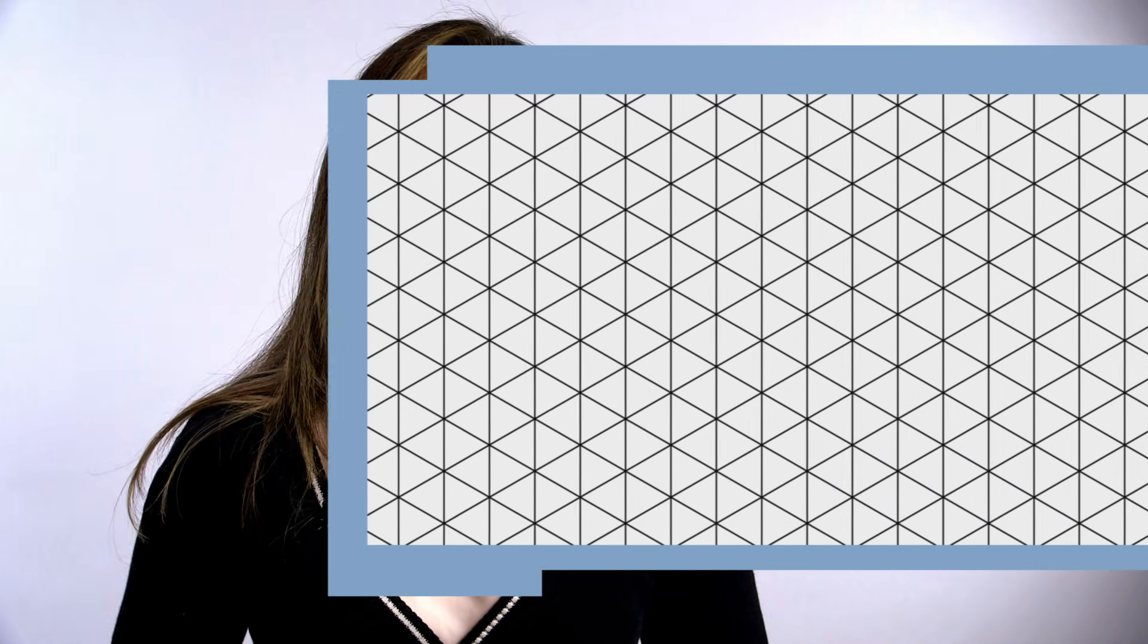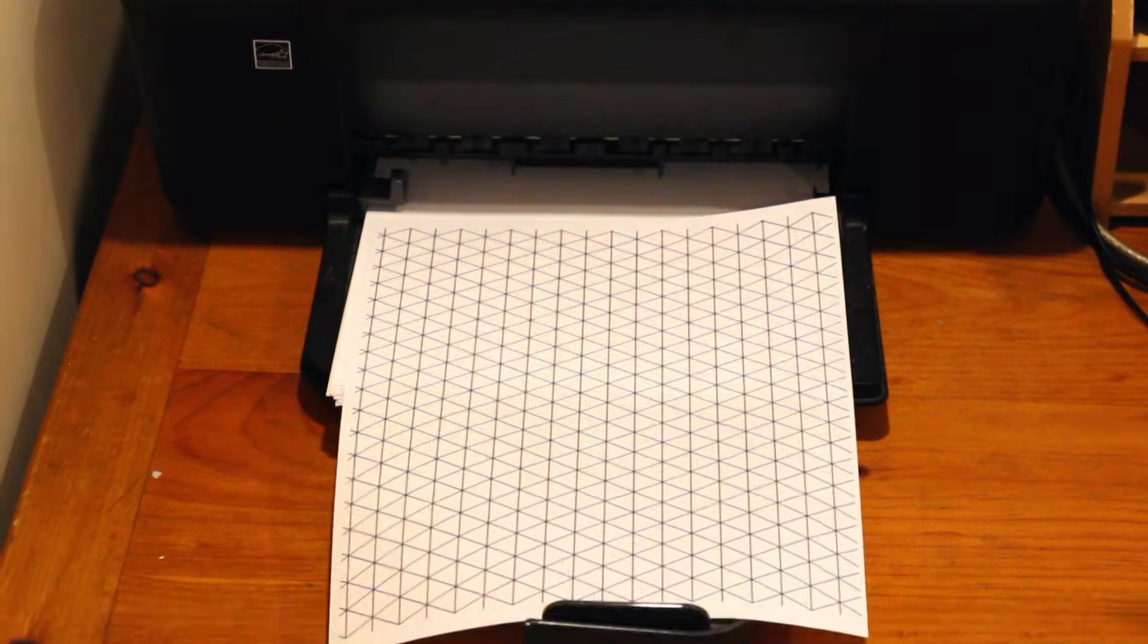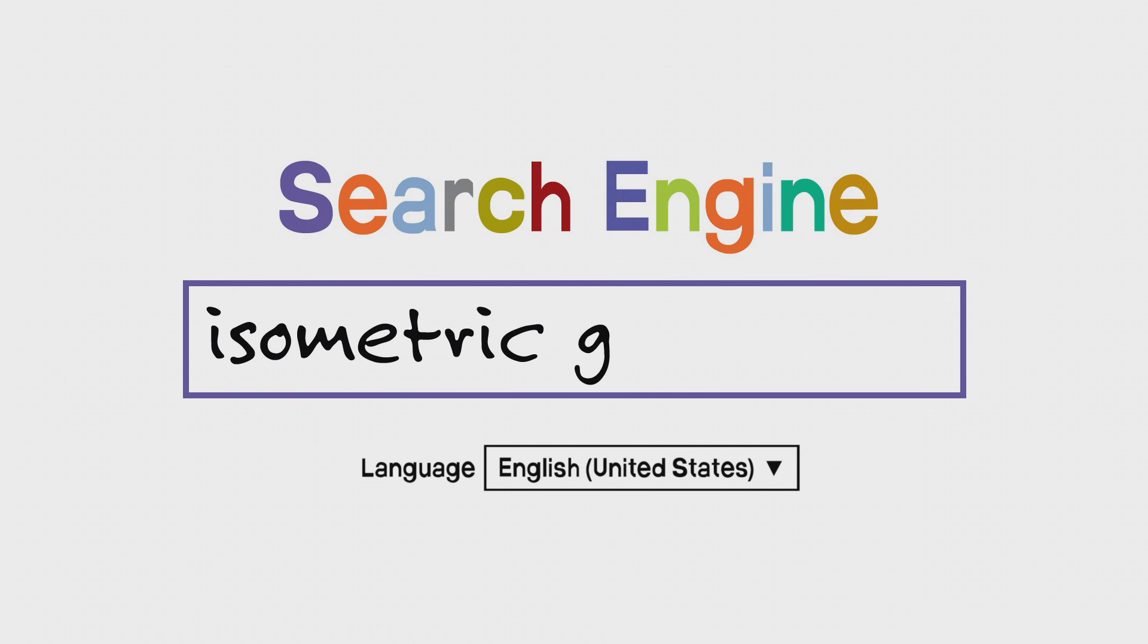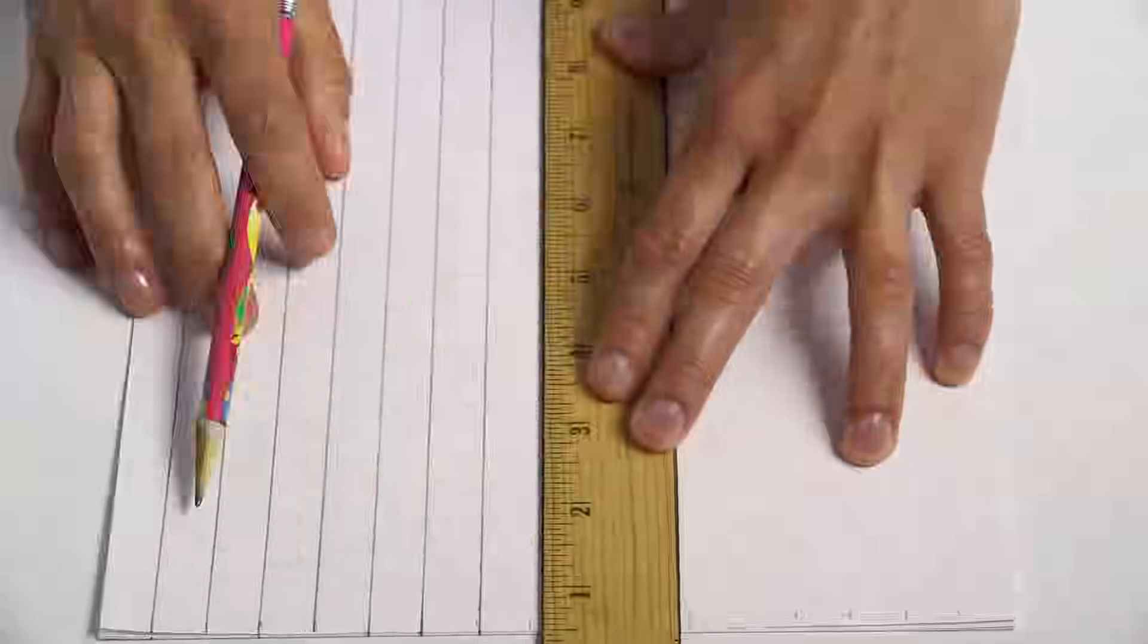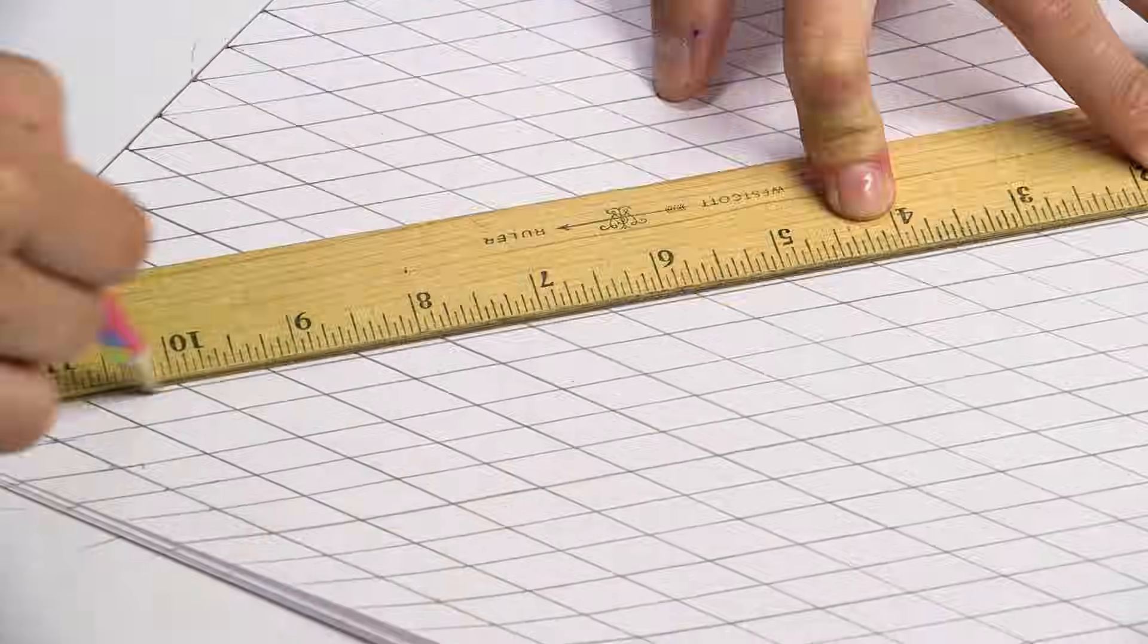You're going to need an isometric grid to help guide you. You can print one out by searching for isometric grid on your computer, or you can also draw one. But I'm going to use a printed one.